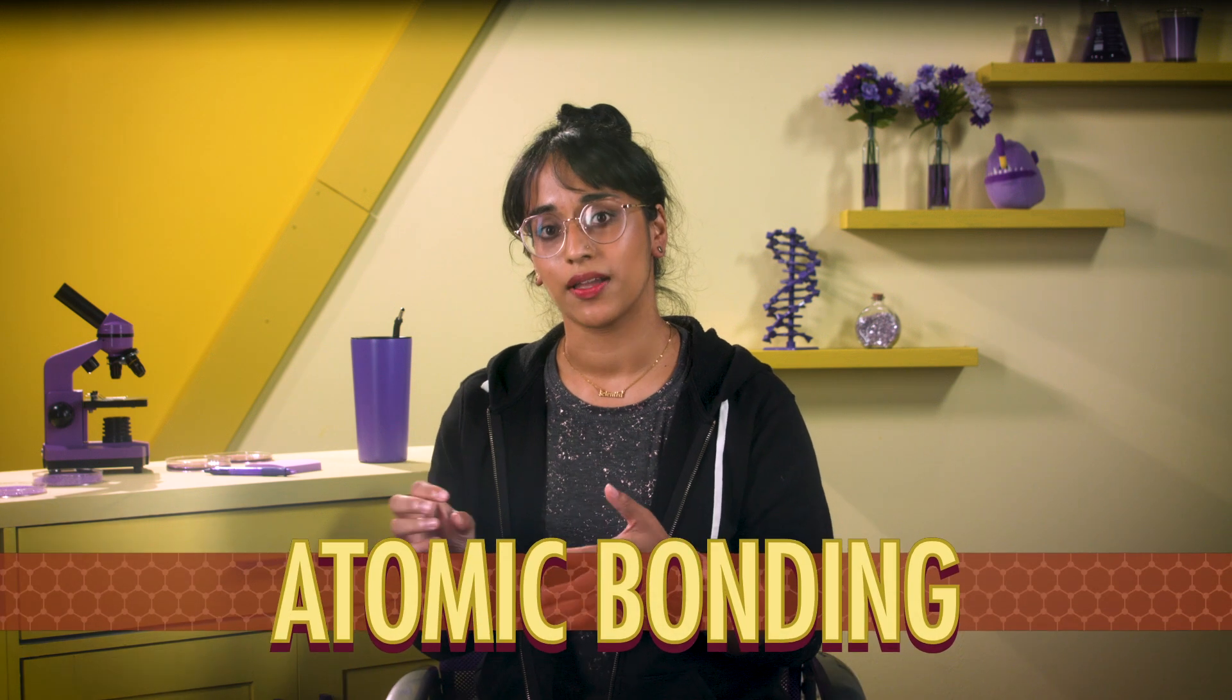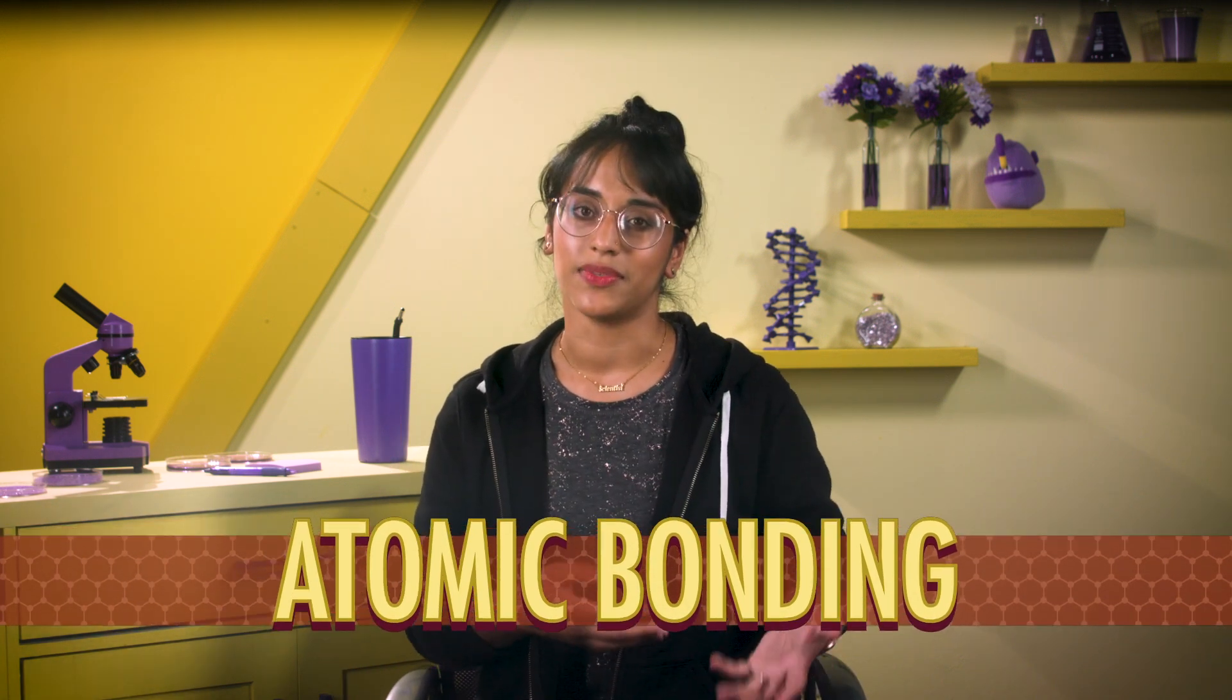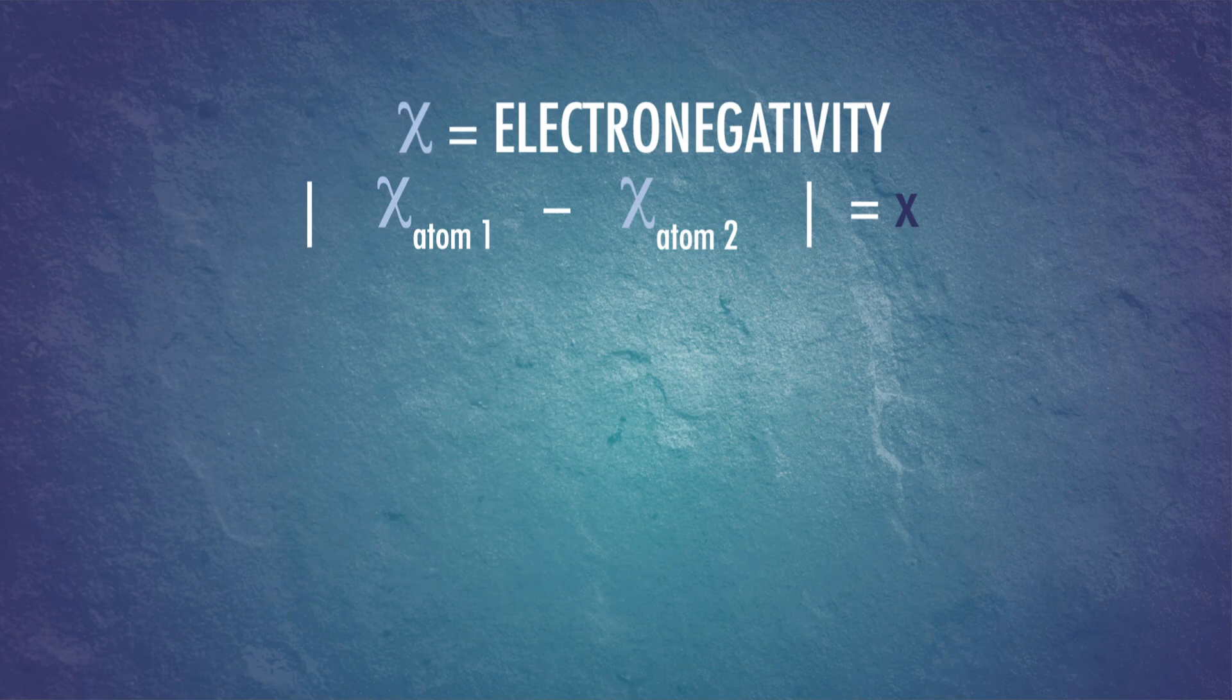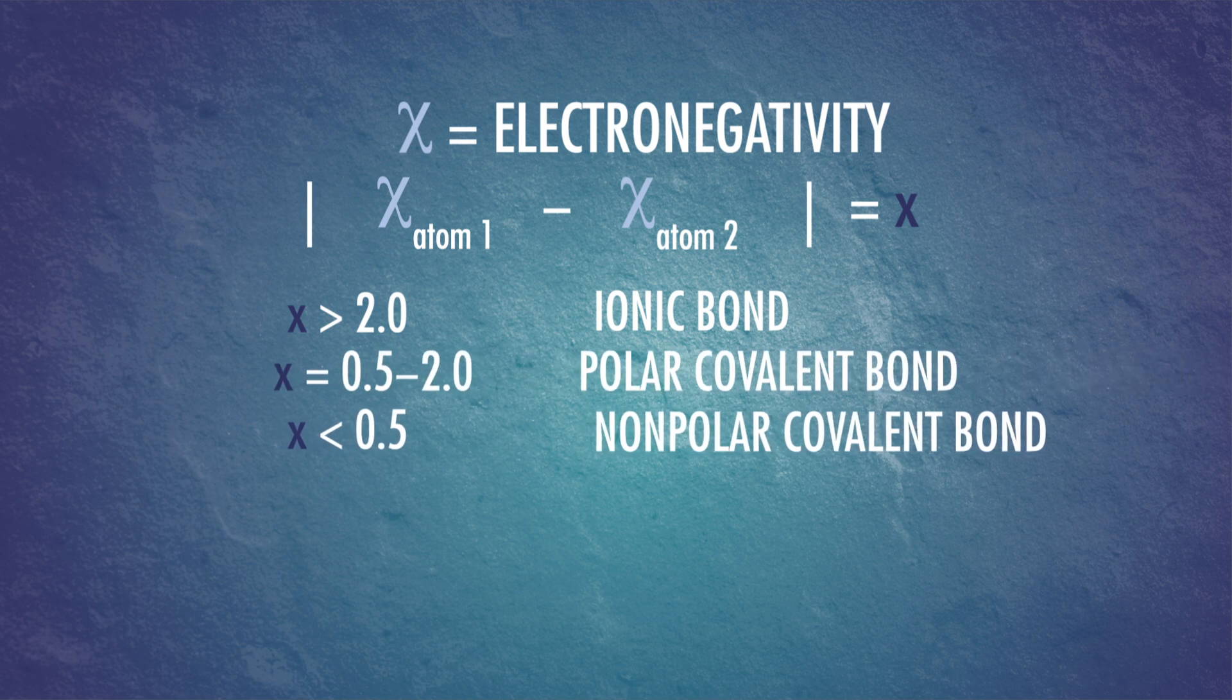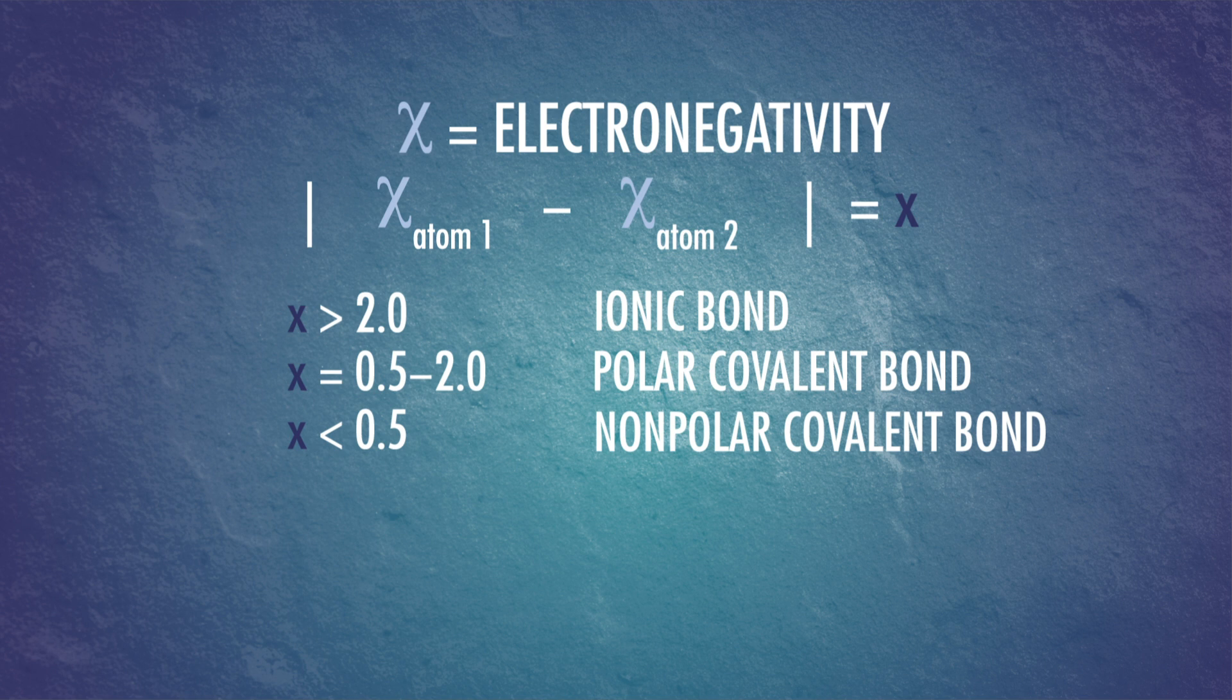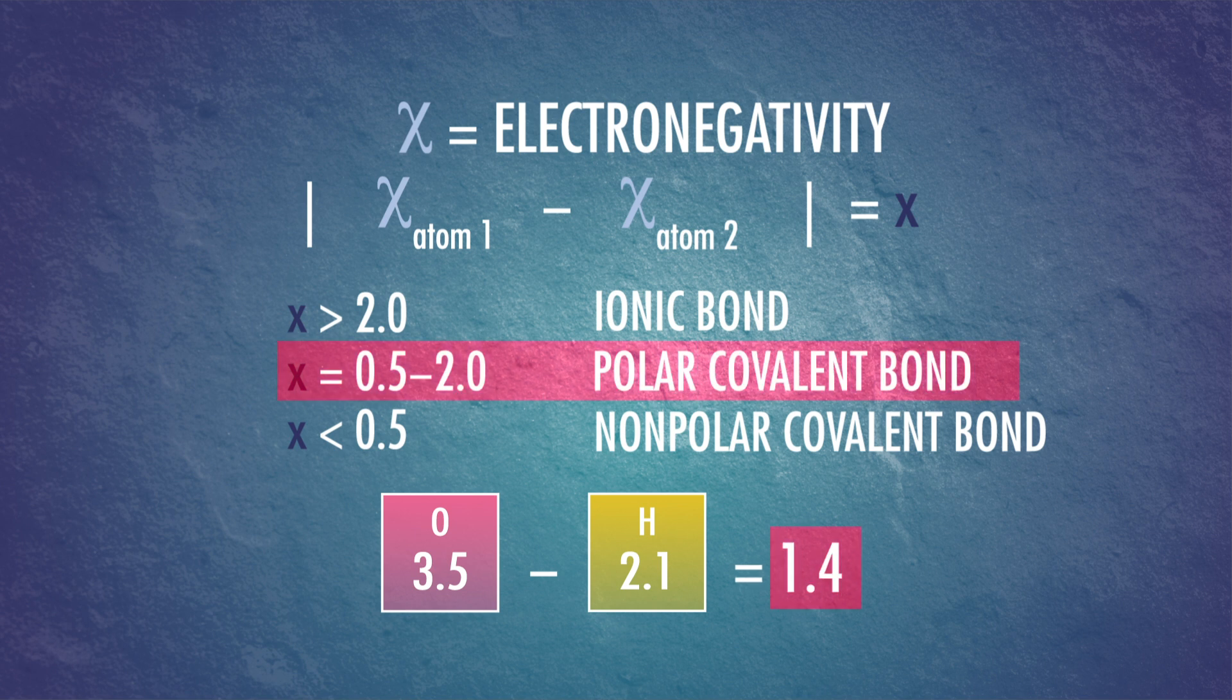First, electronegativity can tell us about atomic bonding, which is exactly what it sounds like, the bonds that hold atoms together. A big difference in electronegativity between two atoms means an ionic bond, a small difference means a nonpolar covalent bond, and everything in between is a polar covalent bond. For example, the electronegativity difference between a hydrogen atom and an oxygen atom in a water molecule is about 1.4, in the polar covalent bond zone.